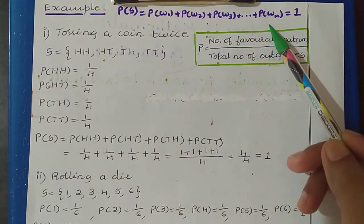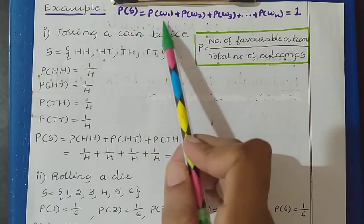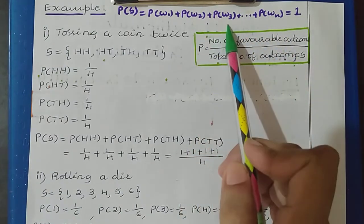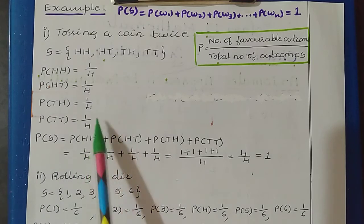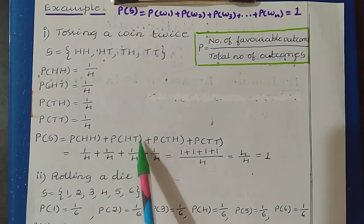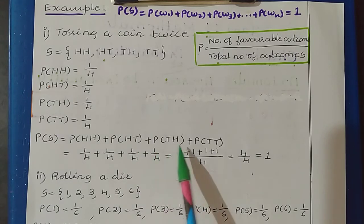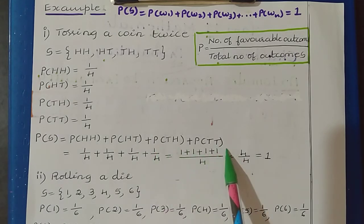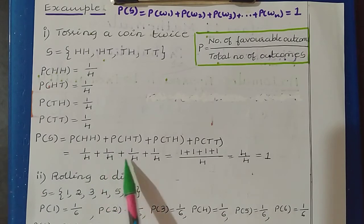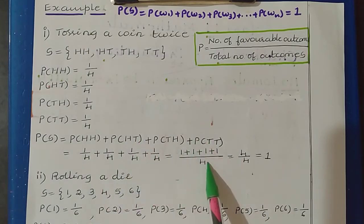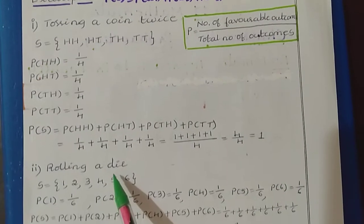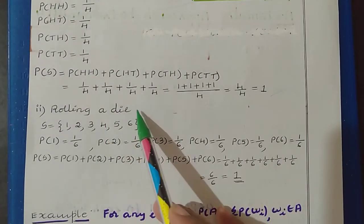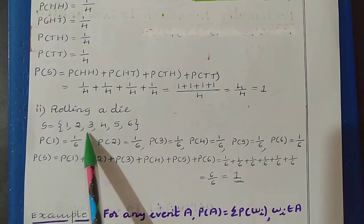Now let us verify this rule. The probability of S is the sum of the probabilities of the outcomes. We have 4 outcomes, so P(S) = P(HH) + P(HT) + P(TH) + P(TT) = 1/4 + 1/4 + 1/4 + 1/4. So here we get 4/4, which is equal to 1. So we got the probability of the sample space as 1.